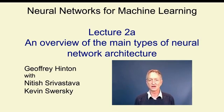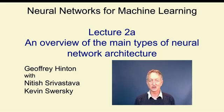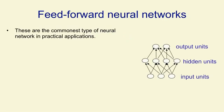Recently, however, people have made a lot of progress in training recurrent neural networks, and they can now do some fairly impressive things. The last kind of architecture I'll describe is a symmetrically connected network, one in which the weights are the same in both directions between two units.